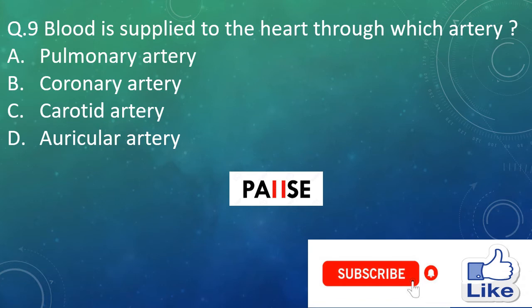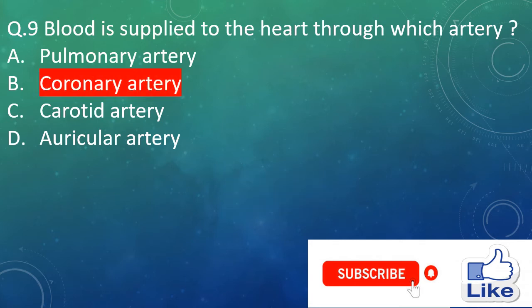Question 9. Blood is supplied to the heart through which artery? Option A: pulmonary artery, option B: coronary artery, option C: carotid artery, and option D: auricular artery. The right answer is option B, coronary artery.